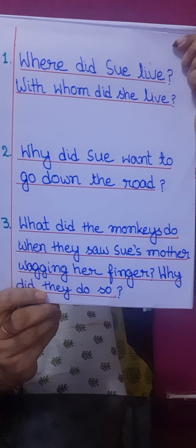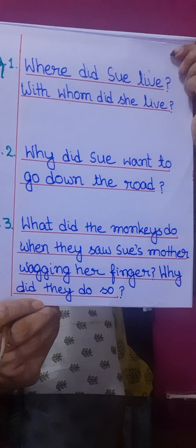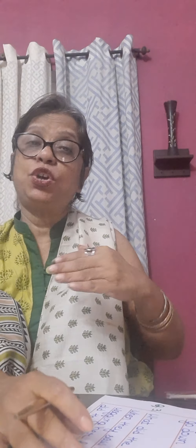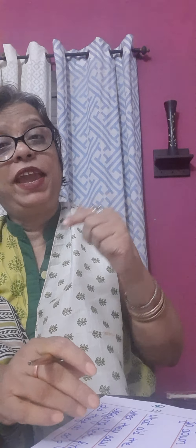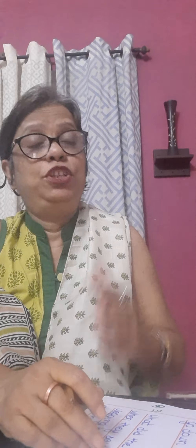Number four: why was Sue's mother angry with her? As ordered by her mother, Sue failed to return home before dark, so her mother was angry with her. Her mother told her to return before dark, but Sue did not return before dark. When Sue got home, it was already dark, so her mother was very angry.